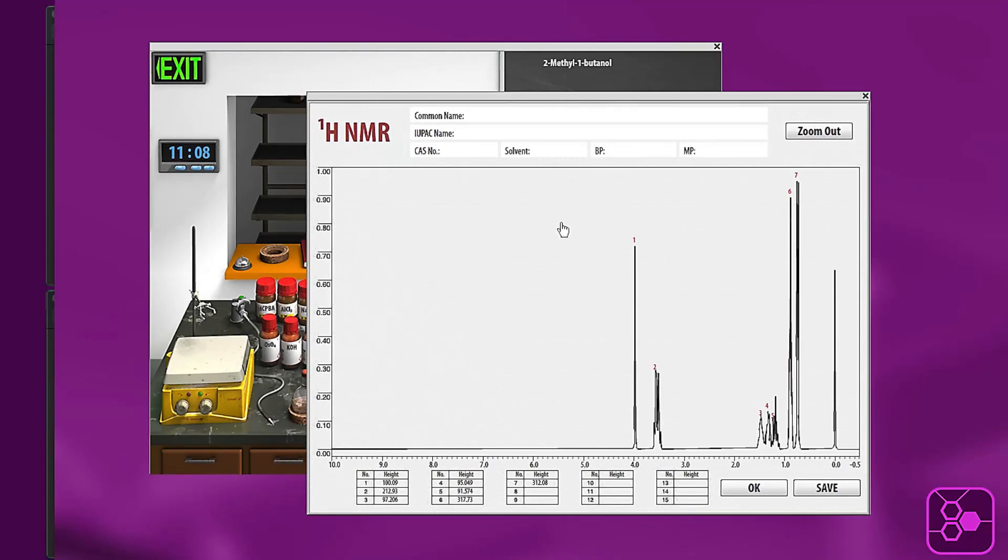Now a couple of things. The peaks will already be labeled for you in small red numbers. There's also a table at the bottom that has the peaks with their numbers and their corresponding peak heights or integrations. These values that are placed in these boxes are arbitrary. They're just for comparing to each other so that you can determine how many protons each peak corresponds to.